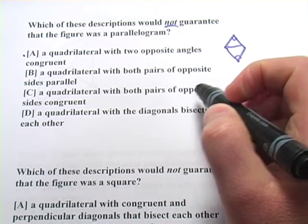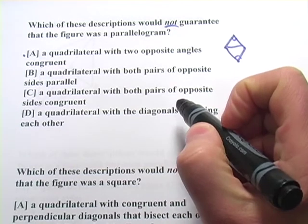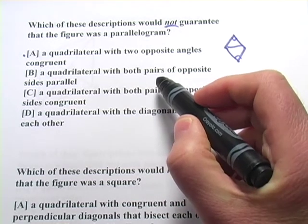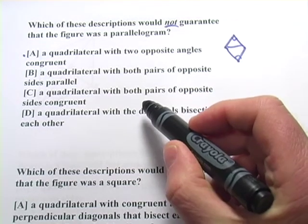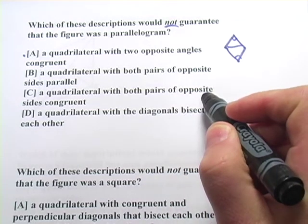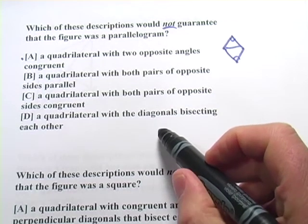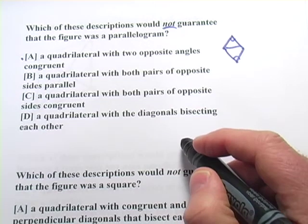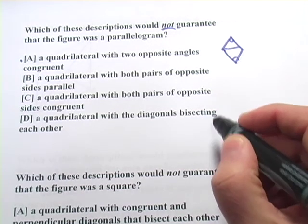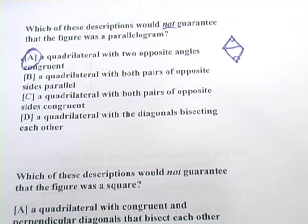Let's look at the others and see if they do guarantee it's a parallelogram. B, a quadrilateral with both pairs of opposite sides parallel. That's a parallelogram. That also describes a rectangle or a square, but those are both subsets of parallelograms. C says, a quadrilateral with both pairs of opposite sides congruent. That would definitely guarantee a parallelogram. And D, a quadrilateral with the diagonals bisecting each other. That's something you're definitely going to see in those parallelograms and the subsets of a parallelogram, such as a square or a rectangle or a rhombus. So, it looks like A was our answer there. All right, let's try one more of these.